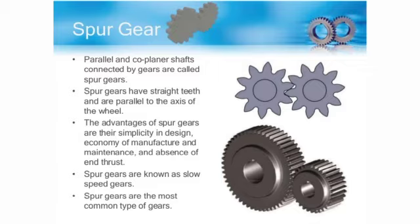The applications of spur gears in the mechanical industry are as follows. They are used in a wide range of speed ratios such as clocks, pumps, watering systems, and power plant machinery. Also, they are used in washing and drying machines.